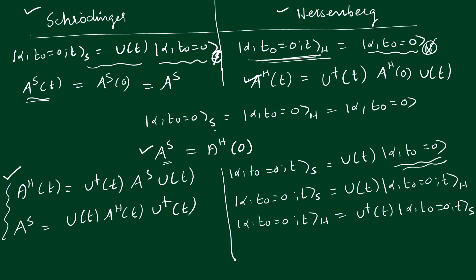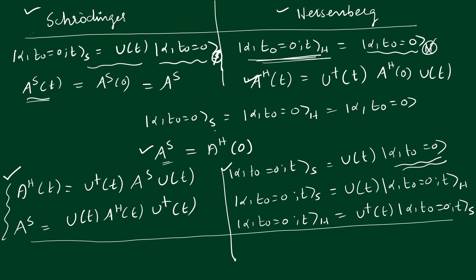These are the relations between operators and states in both pictures. Even though the description of time evolution is different in both pictures, they both predict the same time dependence for the expectation values — the expectation values are the same in both pictures. With that, I shall conclude the session. Thank you.